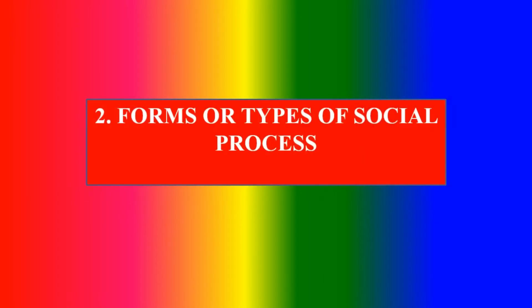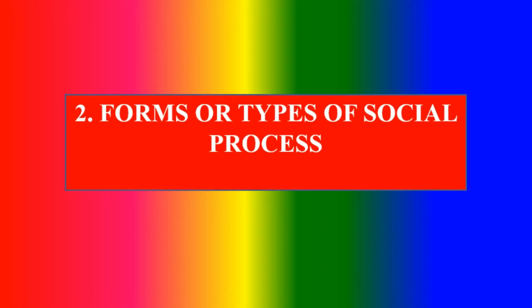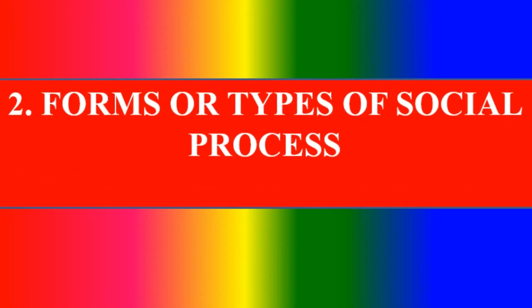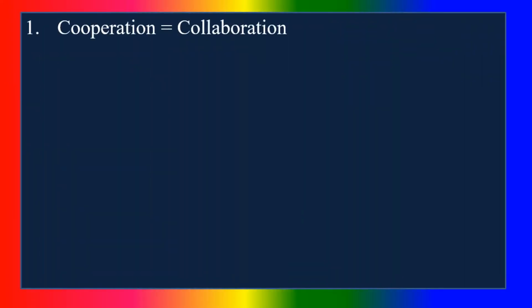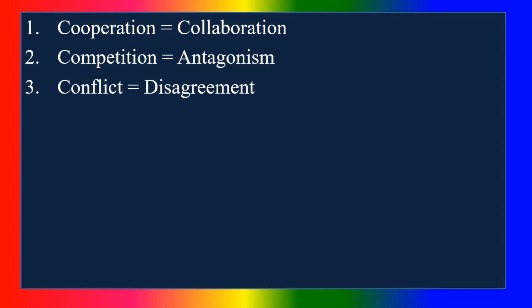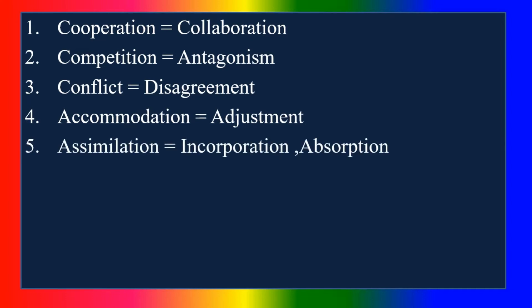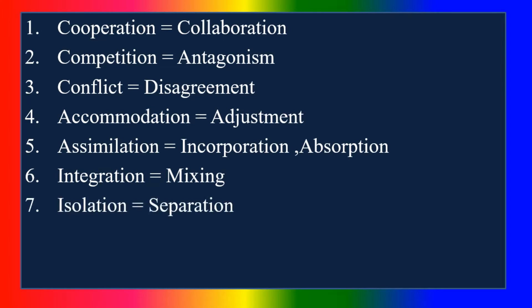Second section: Forms or Types of Social Process. First, Cooperation — means collaboration. Second, Competition — means antagonism. Third, Conflict — disagreement. Fourth, Accommodation — means adjustment. Fifth, Assimilation — means absorption. Sixth, Integration — mixing. Seventh, Isolation — separation.